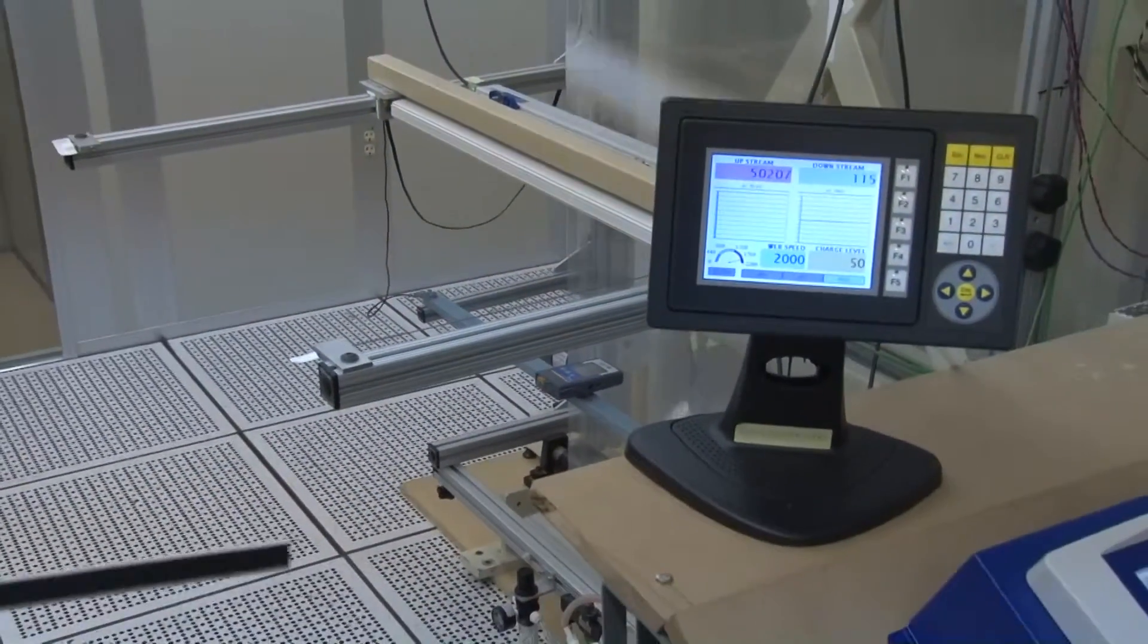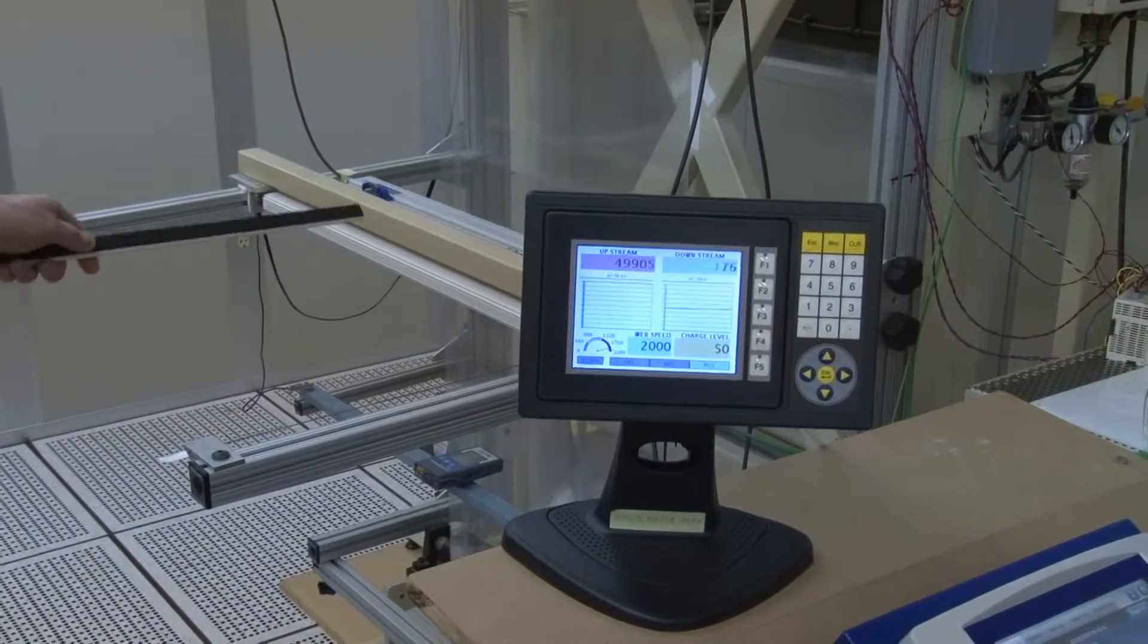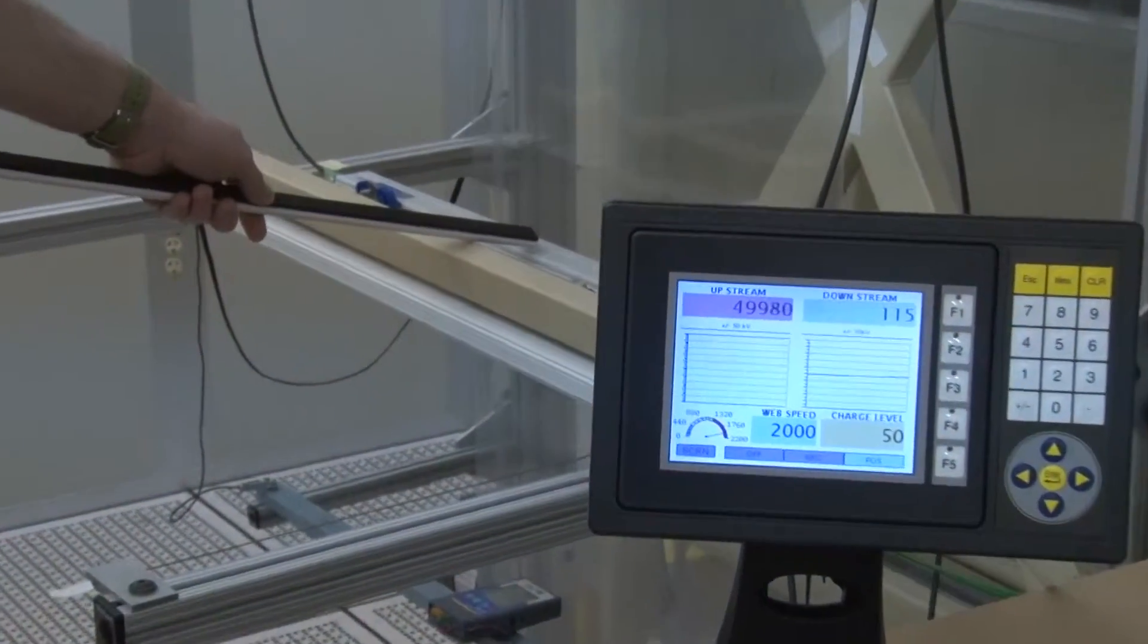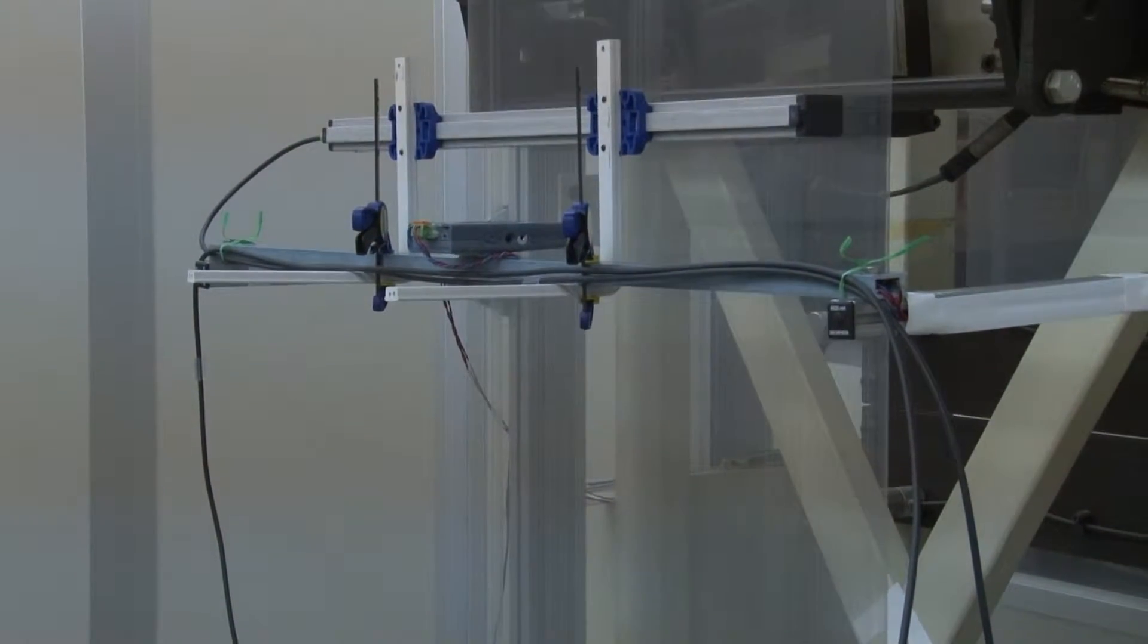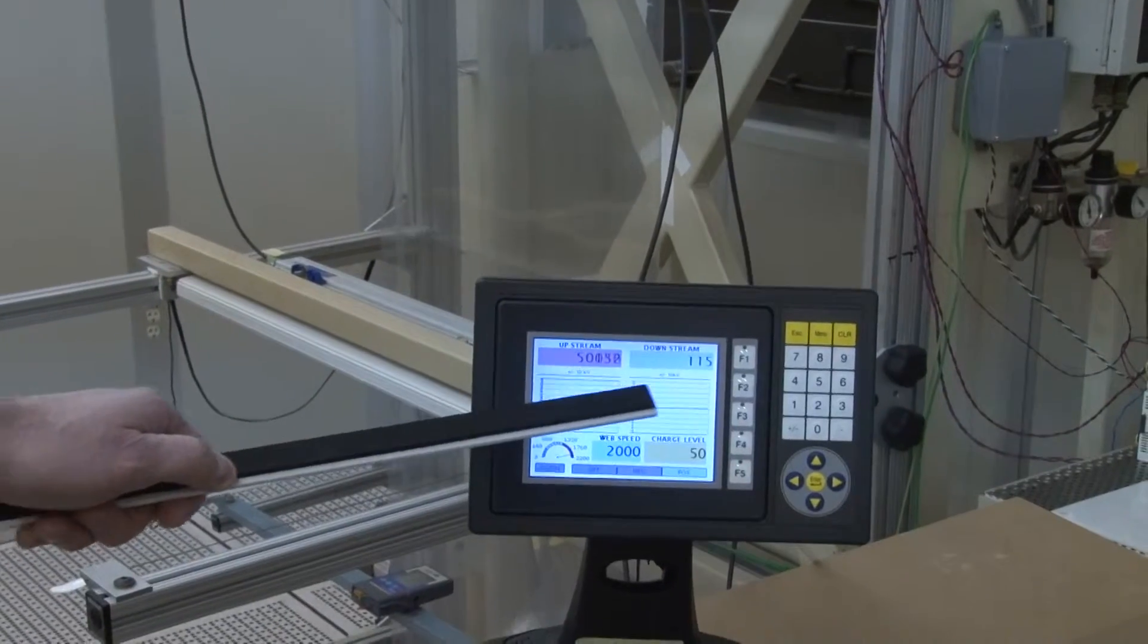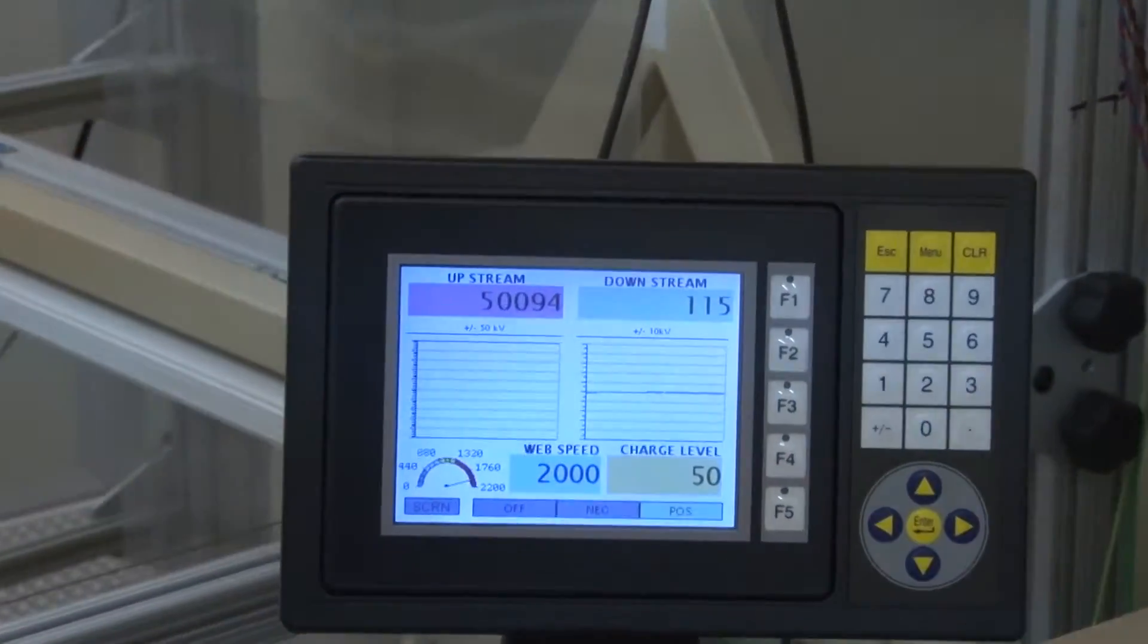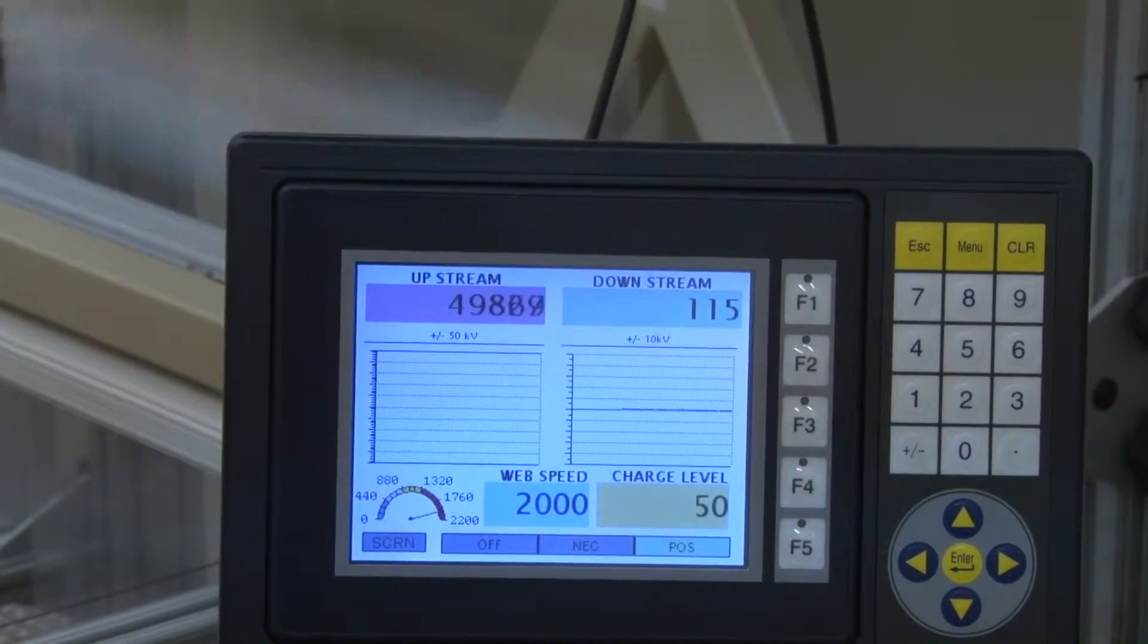As we go downstream sensor, which is downstream from the neutralizing bar, on this sensor we can see how well the material has been neutralized, and in this case we're taking 50,000 volts down to 115 volts, which is essentially zero in this type of application.